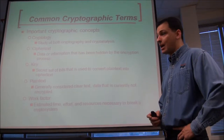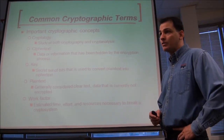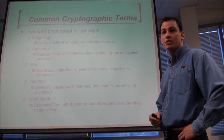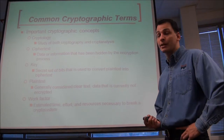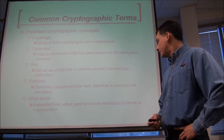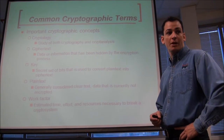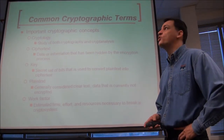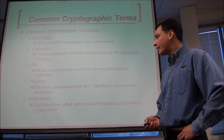The work factor is how much time, effort, money, and resources that's going to take. One strategy when you're encrypting is to make the work factor just astronomically long, so that people give up before they get to the data. That's why you have algorithms that will produce a work factor of 72 trillion years — we're just not going to be around for that one.